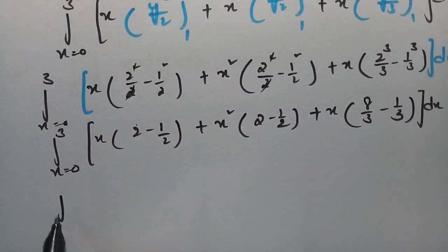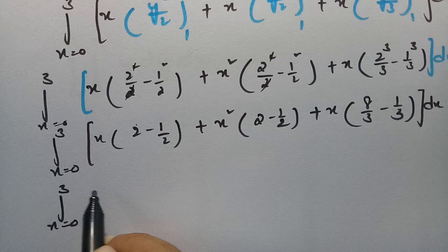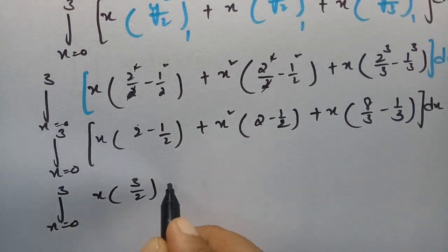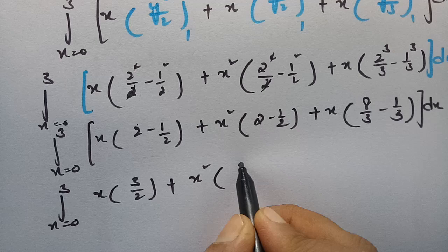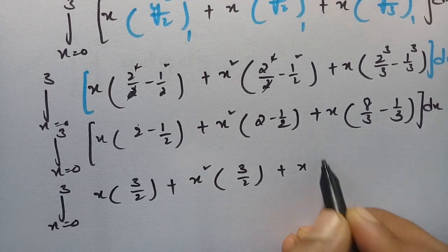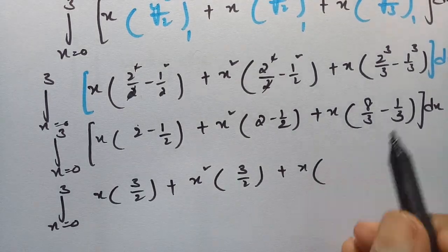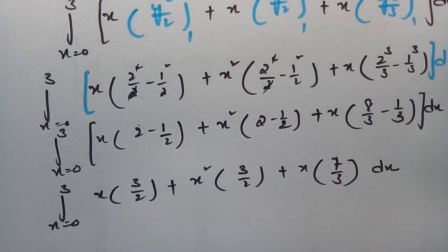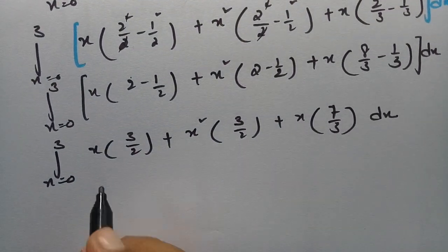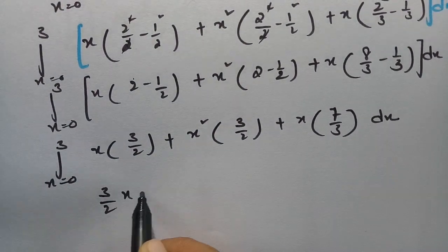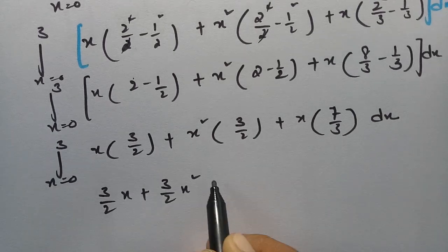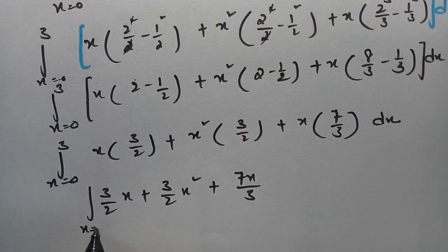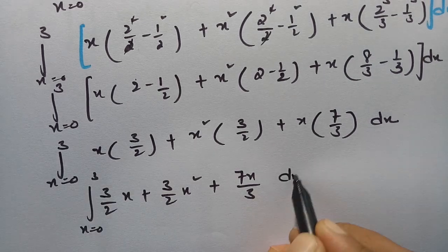Simplifying: 2² = 4, so 4/2 − 1/2 = 3/2. For x²: similarly 3/2. For x: 2³ = 8, so 8/3 − 1/3 = 7/3. So the integral from 0 to 3 becomes (3/2)x + (3/2)x² + (7/3)x dx.